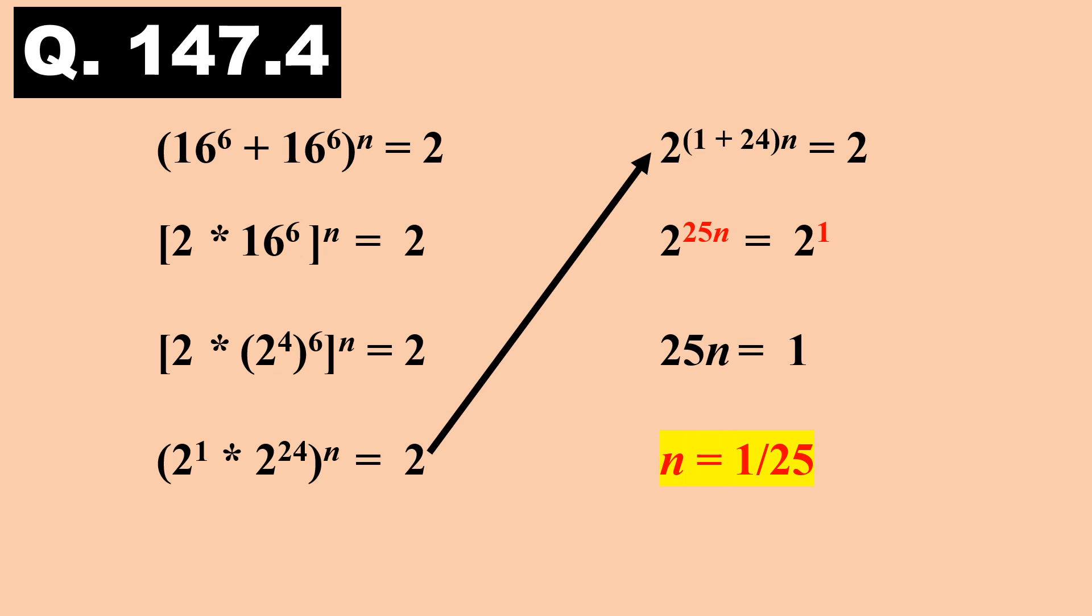Answer to question 147.4. Write 16 as 2 power 4. This, when raised to power 6, will give 2 power 24. So, 2 into 2 power 24, which gives 2 power 25. When raised to power n, the exponent is 25n. 2 power 25n is equal to 2 power 1. Equate the exponents. 25n is equal to 1, or n is equal to 1 by 25.